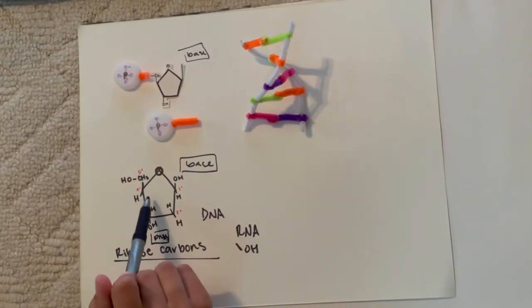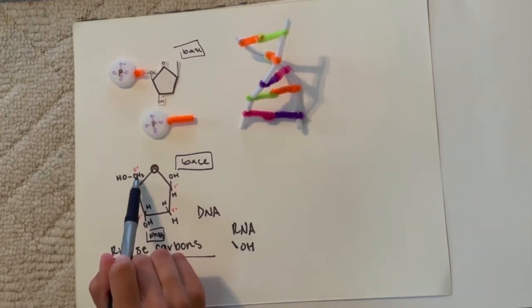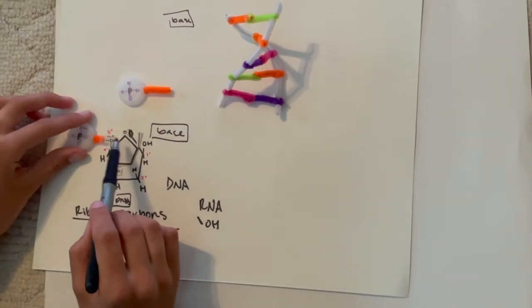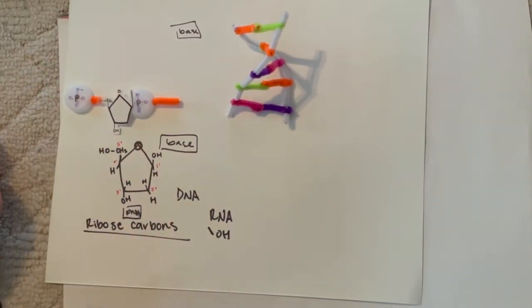So this would be another phosphate. Then the four prime is where a methyl group attaches to go to the other phosphate right here. So this part, the phosphate, is where it attaches at the five prime position.